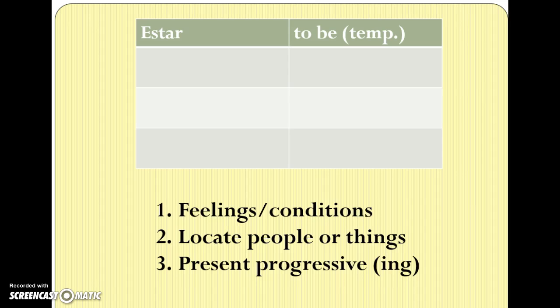Our first unit with the verb estar is dealing with feelings. The first thing that we need to do is be able to conjugate the verb estar. When you conjugate the verb estar, which means to be in a temporary sense, it's like a regular AR verb with a few exceptions. So go ahead and conjugate the verb estar as if it was a regular AR verb.